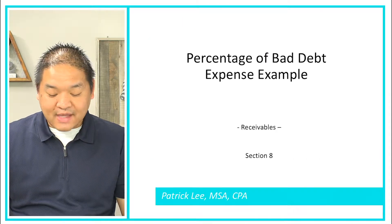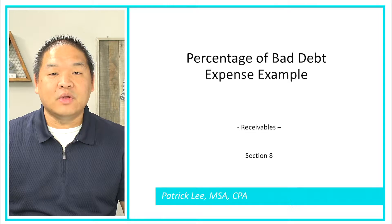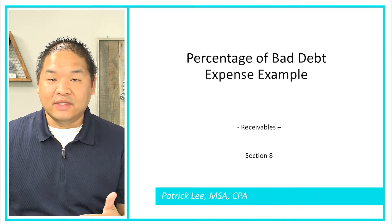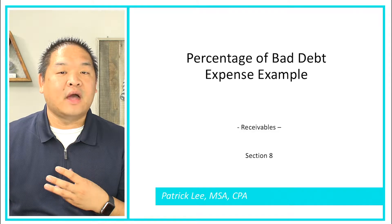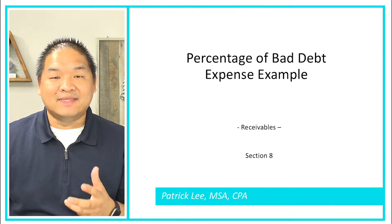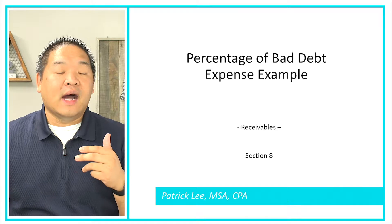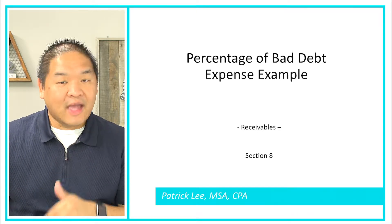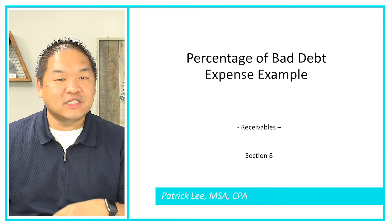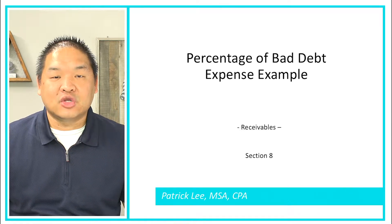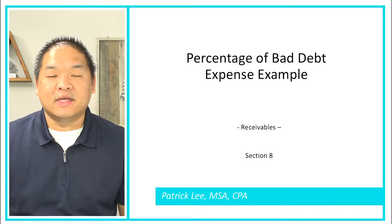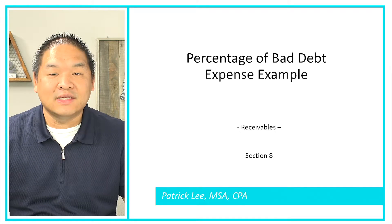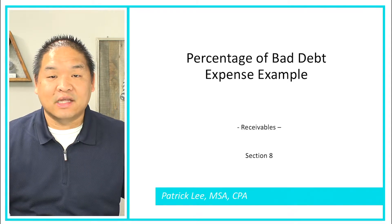That is our percentage of bad debt expense example — really easy to calculate once we have all the numbers. The only difficulty might be that you have to calculate the estimated bad debt loss rate yourself, or they don't give you net credit sales directly — they give you total sales along with cash sales, or maybe a percentage of total sales that is credit sales, and you have to calculate that out. That's the only thing that would make this a bit more difficult.